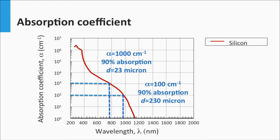Around a wavelength of 970 nm, crystalline silicon has an absorption coefficient of 100 per centimeter, and it requires an absorption path length of 230 microns to absorb 90% of all the light. This is a typical thickness of a silicon wafer. This demonstrates that light trapping techniques become important for crystalline silicon absorber layers above a wavelength of 900 nm.